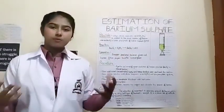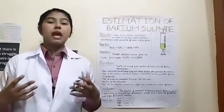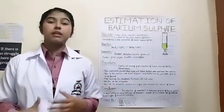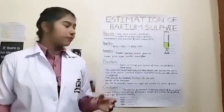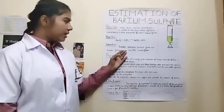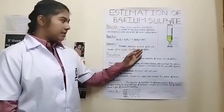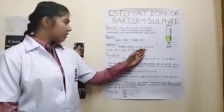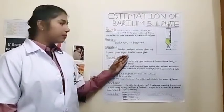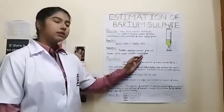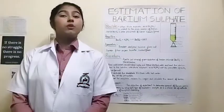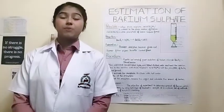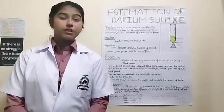To perform this experiment, we need apparatus, and the apparatus are: beaker, analytical balance, glass rod, burner, filter paper, burette, and conical flask. Let's come to the major part of this presentation, which is the procedure.